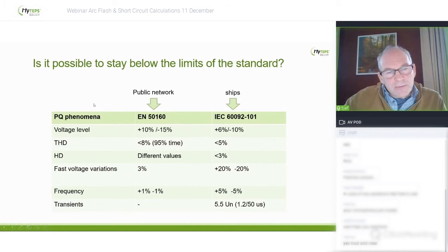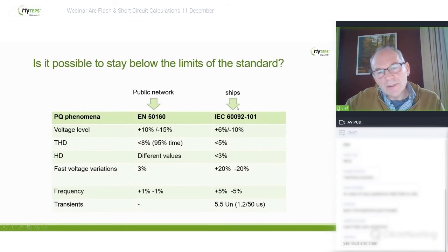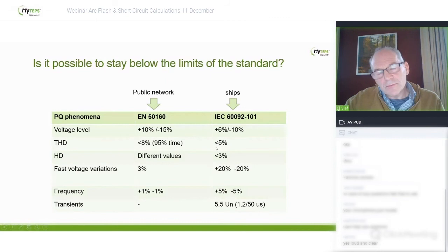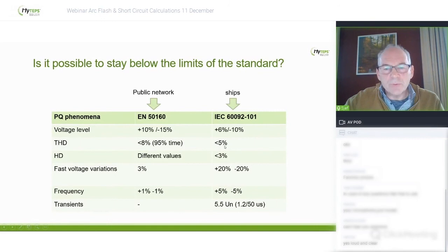The challenge is to design an installation that stays below the limits of the standard. The standard is different for public networks versus ships. For fast voltage variations, the limits are much wider on ships — plus and minus 20 percent compared with public network acceptable variation. But for total harmonic distortion, the limit on a ship is actually stricter than for a public network. And that's the big challenge: this is much more difficult to achieve because the network is weaker. So keeping total harmonic distortion below 5 percent is quite a big challenge.